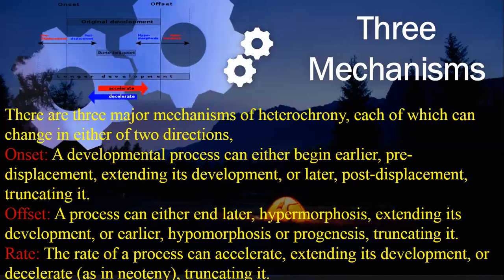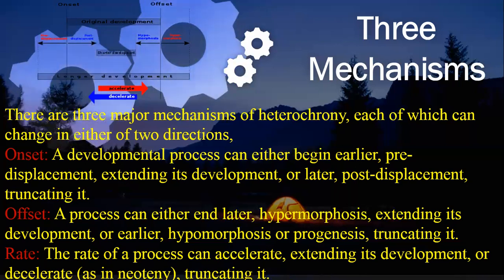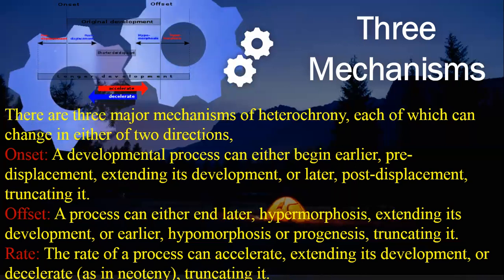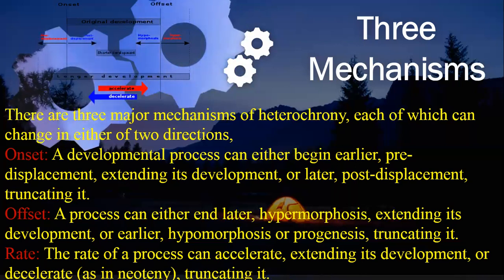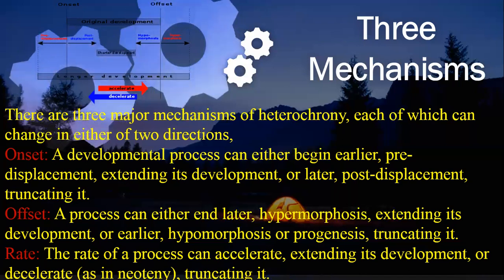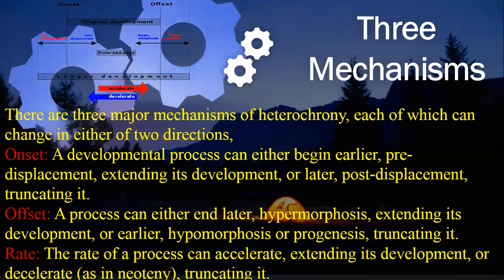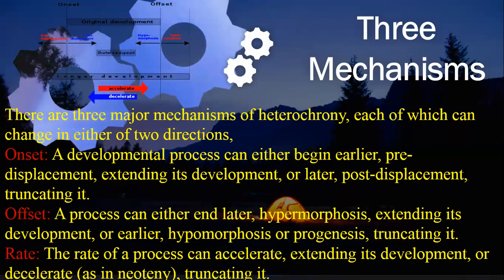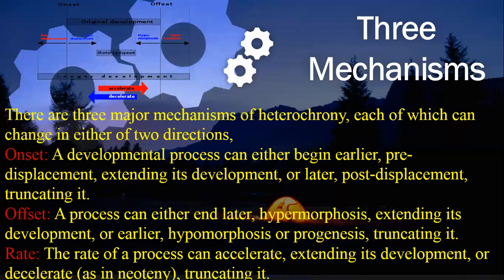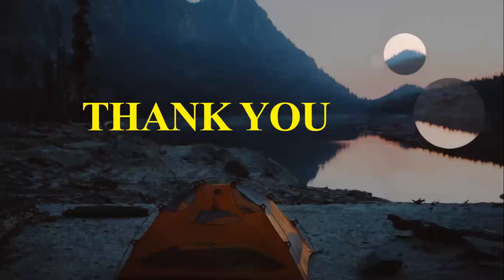An offset process can either end later, as in hypermorphosis, extending development, or end earlier as in a truncation type morphosis. These three steps — offset, pre, or post phases — operating in two directions can either accelerate or extend development. That was a short overview of heterochrony and its types. Thank you for listening.